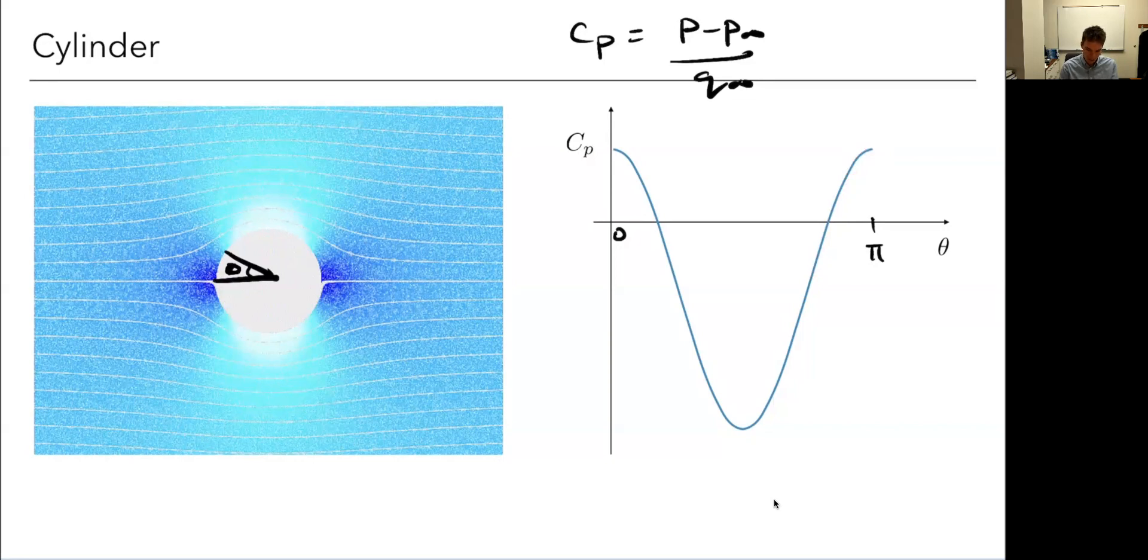If I was to draw a line that represented front to back like this, this left side and this right side are symmetric, so there'd be no drag. Every force on this side is balanced by one on this side in this inviscid world.